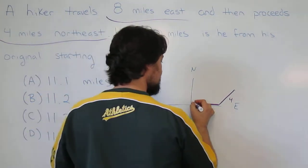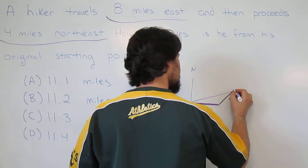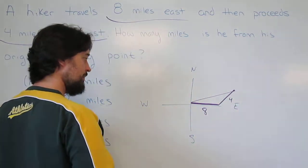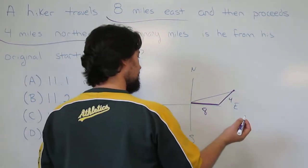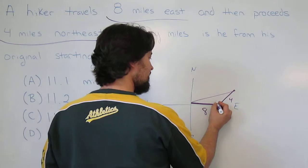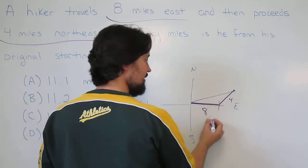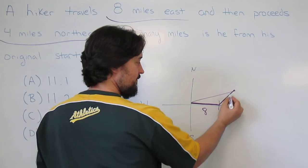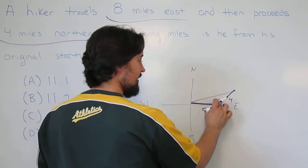Our task is to find this length. We know two sides, we're looking for the third. Remember this angle is 135 degrees because it was 90 degrees plus another 45, making it 135.